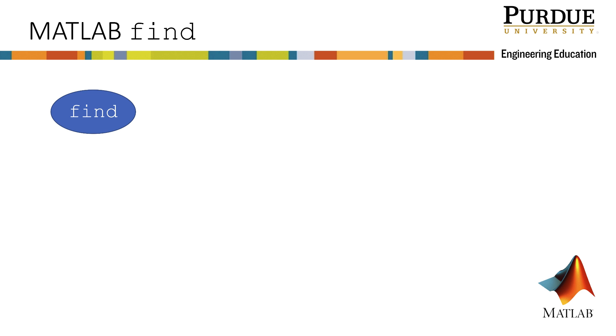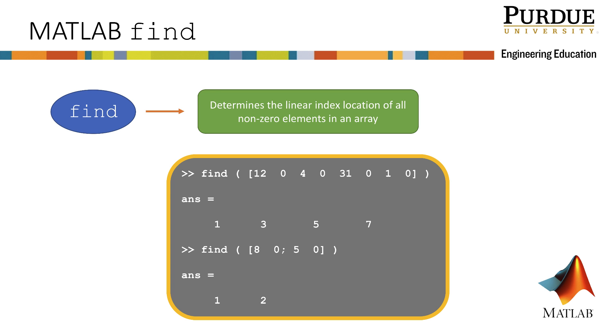MATLAB has a built-in function called FIND. FIND determines the linear index location of all non-zero elements in an array. Here are two examples of how FIND works. In the first example, the non-zero elements are highlighted. Notice that these are the first, third, fifth, and seventh elements in the array. MATLAB returns the linear indices of the array, which in this case are 1, 3, 5, and 7. The second example has non-zero elements in the first row, first column, and the second row, first column. These correspond to the linear indices of 1 and 2.